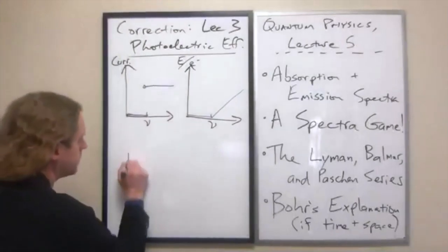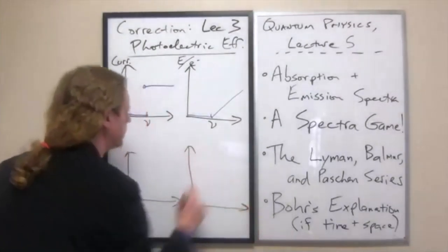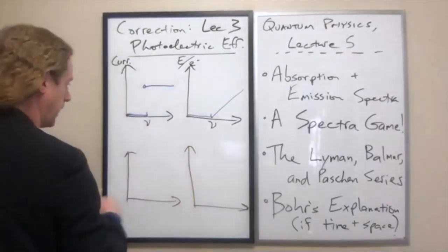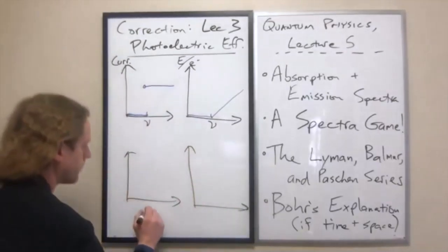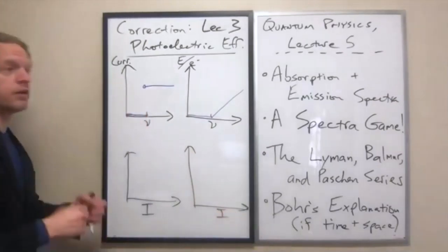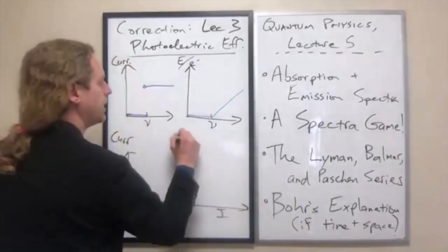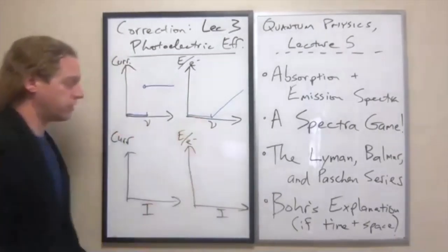The second two set of graphs, what we did here was we measured, we changed the intensity of light. So that's what capital I indicates here. And we measured the same outputs, the current, and we also looked at the energy per electron.